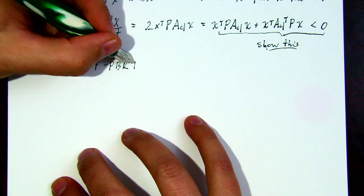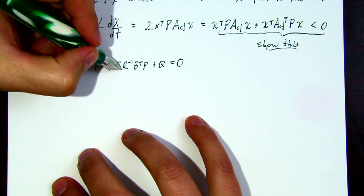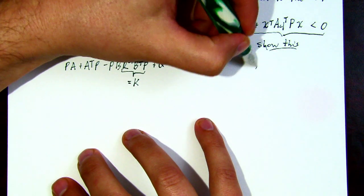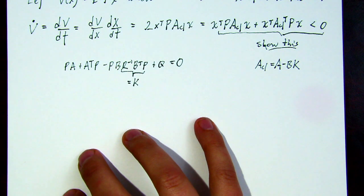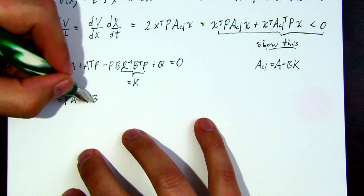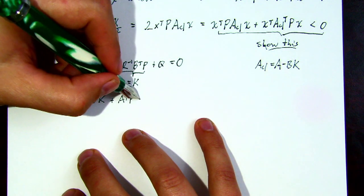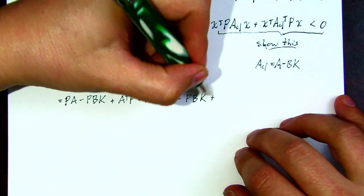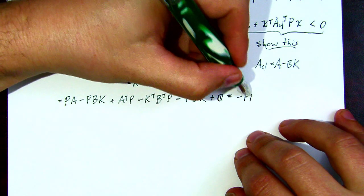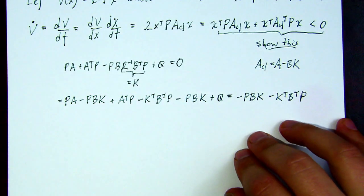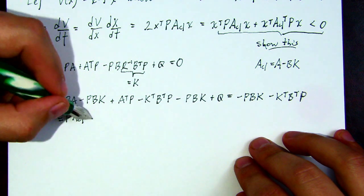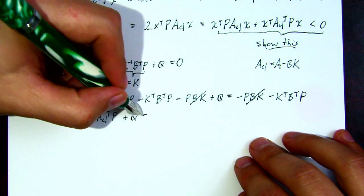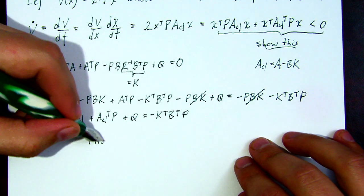To show this, we go to the algebraic Riccati equation. We note that a certain term is the gain K. To get A_{cl} terms to appear, we subtract PBK from the first term of the ARE to form the closed-loop matrix, and do the same for the second term. Then we add those same terms back on the right-hand side so the ARE is still the ARE. We can now write this in terms of the closed-loop matrix A_{cl} and cancel the quadratic term, leaving just Q on one side and minus K^T B^T P on the right.